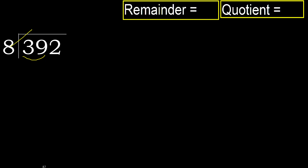8 — multiply by which number is nearest to 39, but not greater. 8 multiplied by 5 is 40, which is greater. Multiply by 4: 32 is not greater.